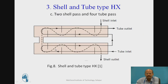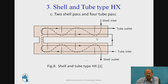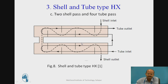We can also increase the number of shells. With two shells, the tube passes become the first, second, third, and fourth tube passes — this is known as two shell passes and four tube passes. If space availability is more, instead of a single shell, we can adopt this two-shell type of heat exchanger.